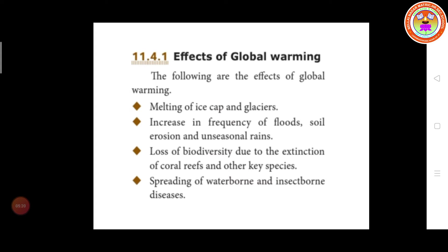The second one is increase in the frequency of floods, soil erosion, and unseasonal rain. The third one is loss of biodiversity due to the extinction of coral reefs and other key species.